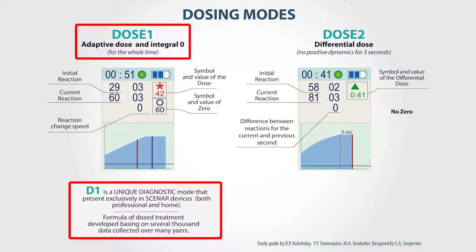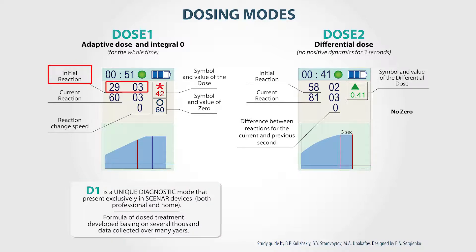The primary expert criterion is the value of reaction. When the electrode is applied to the skin, the value of initial reaction appears and stays on the screen. If we take the device off the skin, this value will remain on the screen.